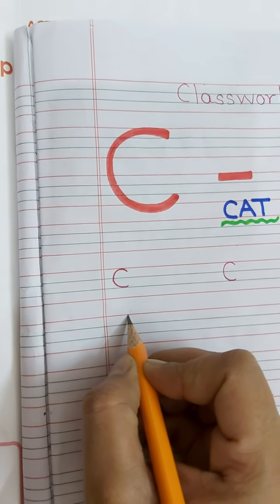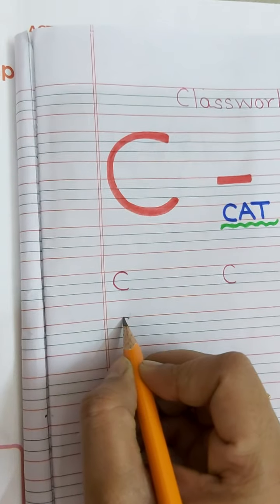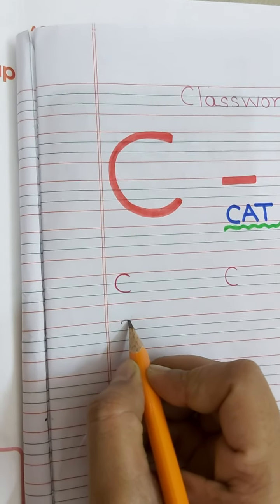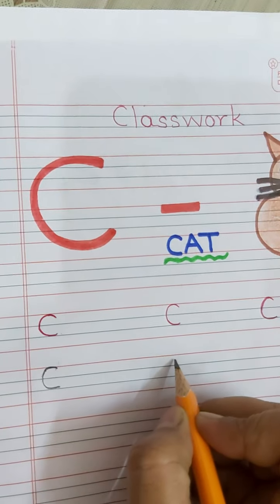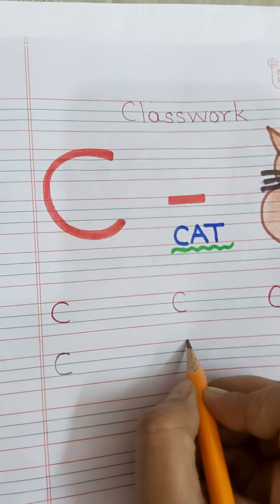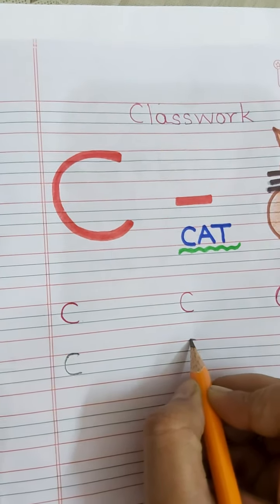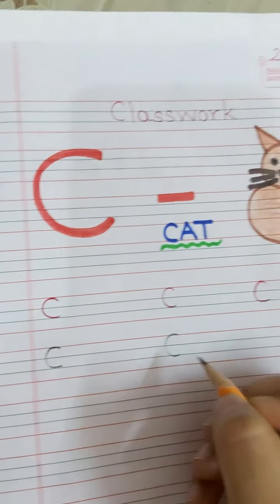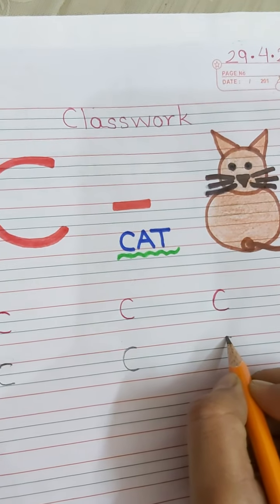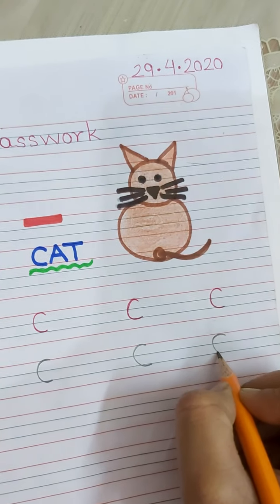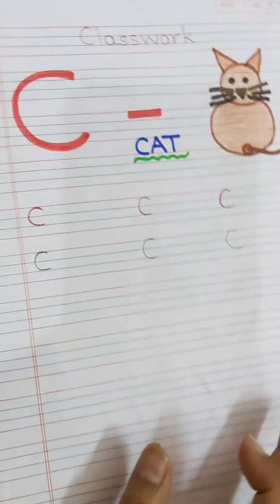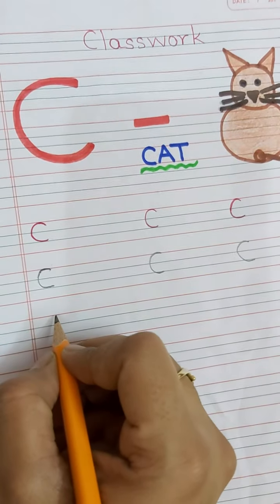And you have to start with line, red line. Aapko red line se start karna hai. You have to make a semi circle. Then again, put your pencil here in the red line. Then semi circle, then semi circle, then again semi circle. C is very easy. C bohat esaan hai likna hai. Okay.